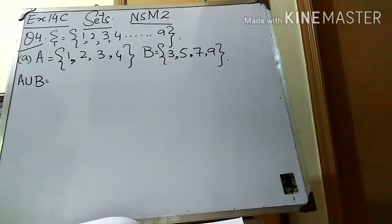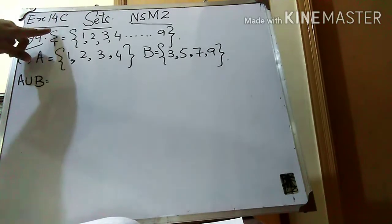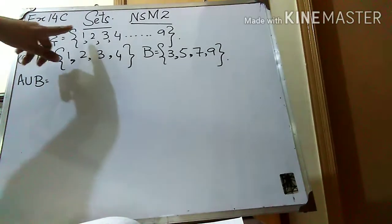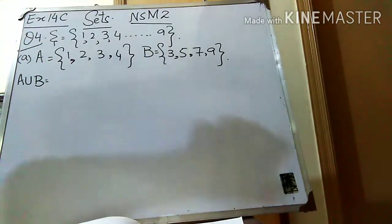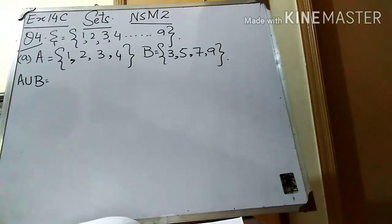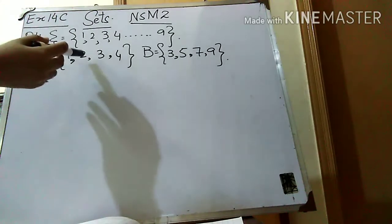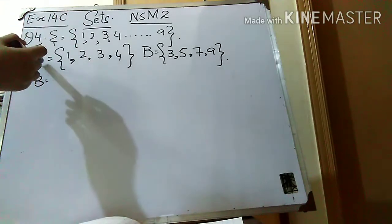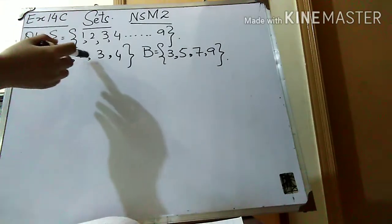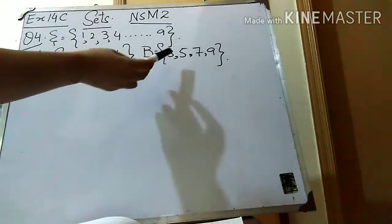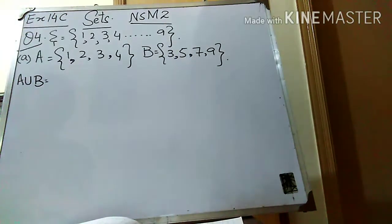Here the universal set is given and that is {1, 2, 3, 4, up to 9}. You have to find out A union B in all the parts. Part A: set A is {1, 2, 3, 4} and set B is {3, 5, 7, 9}.